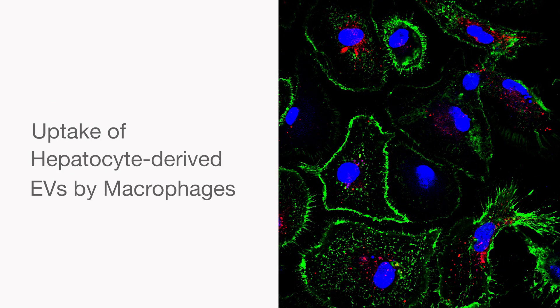This leads to the formation of these tiny, tiny particles that cells release. We call them extracellular vesicles. We've gone on to show that these EVs that hepatocytes are releasing as a consequence of ER stress are pro-inflammatory, and they can attract macrophages into the liver parenchyma, promoting liver inflammation.